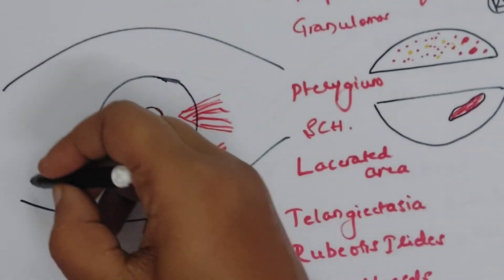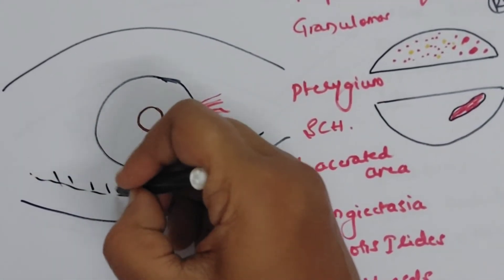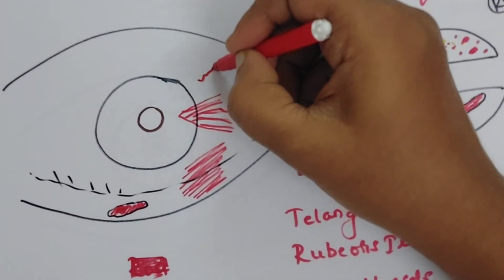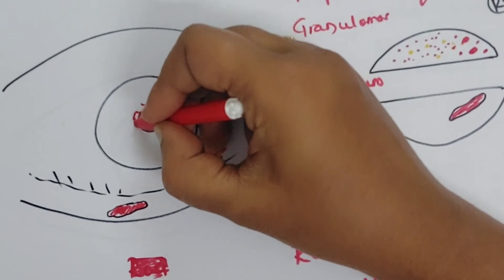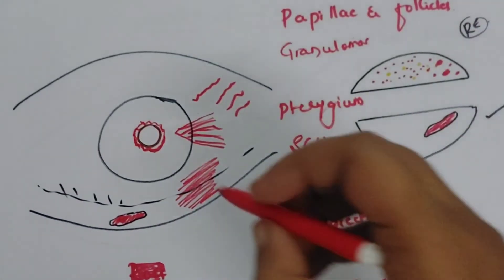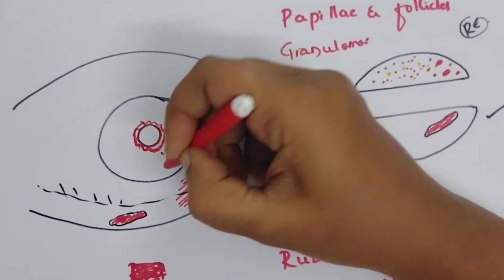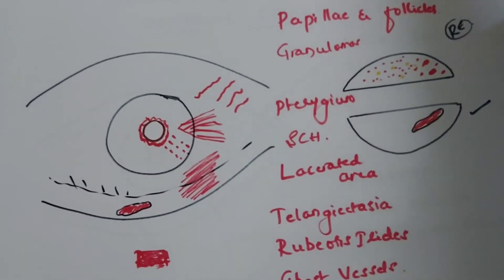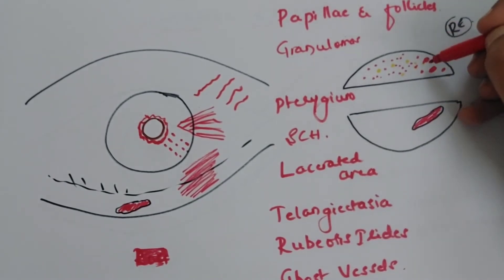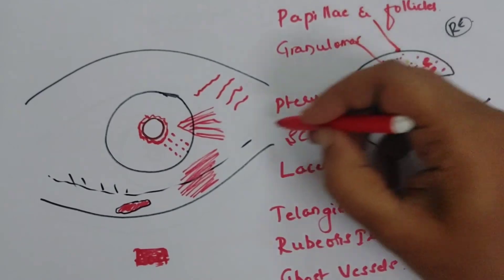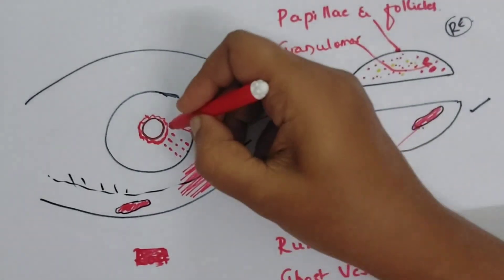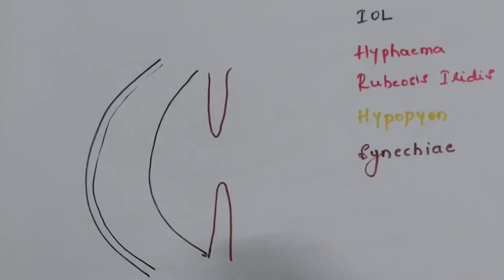On the skin side of the eyelid, mark the area with eyelashes; a lacerated wound is shown with a black outline filled with red. Telangiectatic vessels on the conjunctiva are shown in red. Rubeosis iridis — irregular vessels around the pupil — is shown in red, and ghost vessels are shown as a red dotted line. Hyphema is shown in red in the slit section. In summary, red represents papillae, follicles, granulomas, pterygium, subconjunctival hemorrhage, lacerated wounds, telangiectatic vessels, rubeosis iridis, ghost vessels, and hyphema.